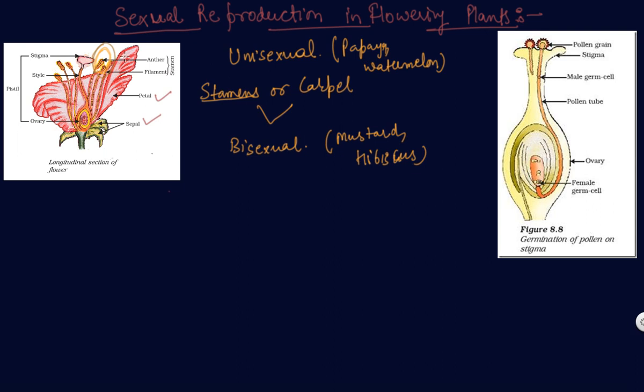Carpel is present in the center of the flower and it is the female reproductive part. It is made up of three parts.